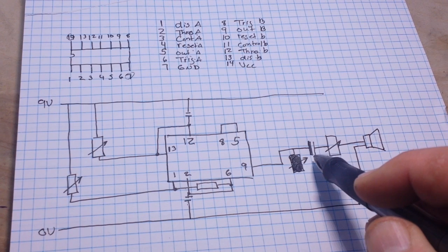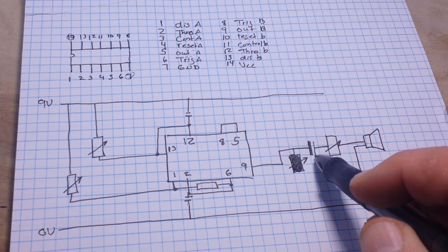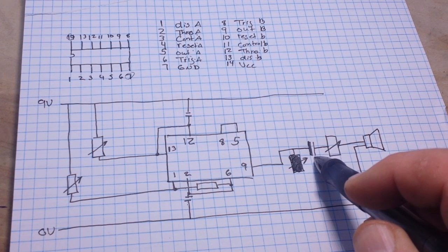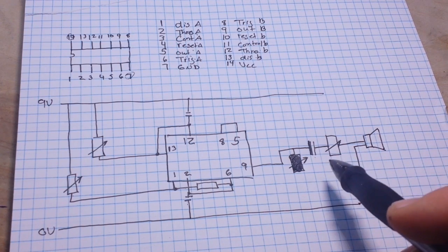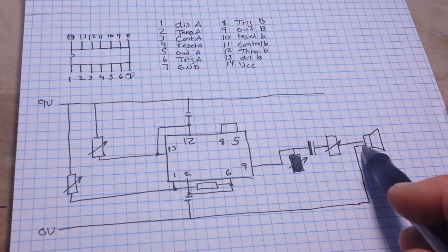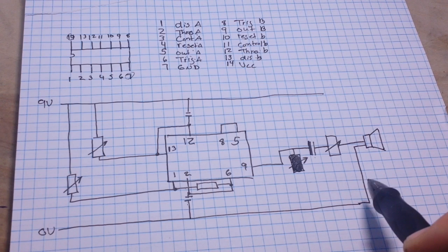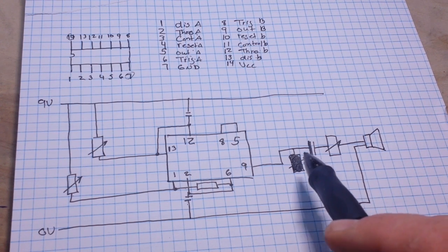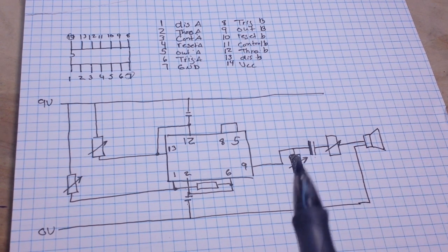Then this capacitor over here, the electrolytic, is simply a DC blocking, so we don't put any DC into our speaker, and then we have the other side of the speaker going to ground. And I am powering this with a 9 volt battery.